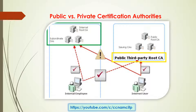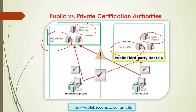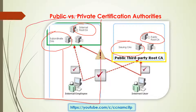Next: public and private certificate authority. There are two types — private and public. As you can see here, this is your internal root certificate authority and subordinate certificate authority, and this is your public issuing certificate authority. This side is your internal user — this is your private side. This user is able to communicate to the certificate authority, and also to the third-party public certificate authority.